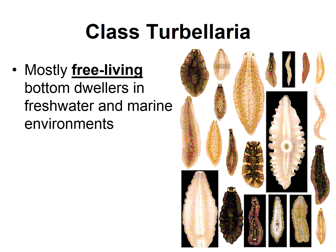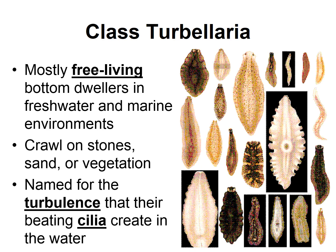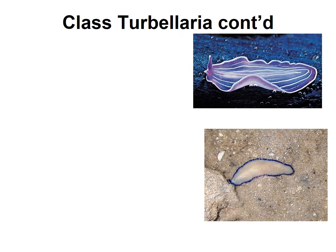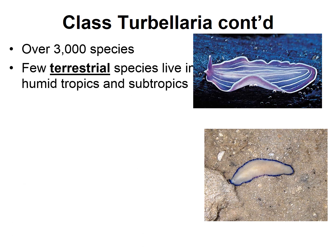Our first class of free-living flatworms is Class Turbellaria. They are mostly free-living bottom dwellers in freshwater and marine environments. Some of them are quite ornate. They will crawl on stones, sand, and vegetation. They are named for the turbulence that their beating cilia create in the water. There are over 3,000 species of turbellarians, and a few terrestrial species that live in very humid tropical areas.